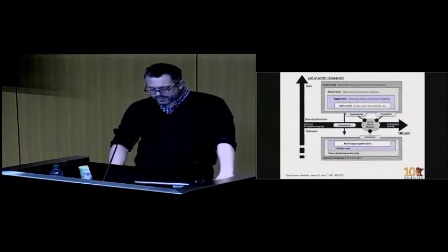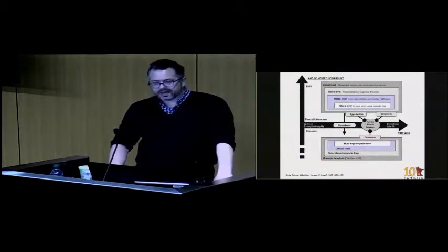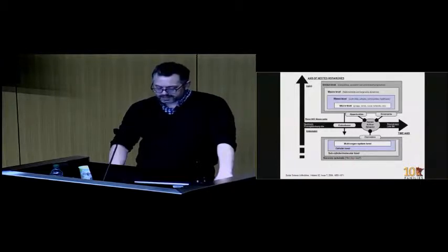This next one is a very busy slide about these axes of nested hierarchies. Where we have global or state level variables, macro level which in our case would be county, mezzo level which would be a personal environment, micro level which would be family. Then we can go within the body from organ function, the cells, subcellular, or the genomic context. So the cohort study will be possible to look at all levels of influence on disease outcome.